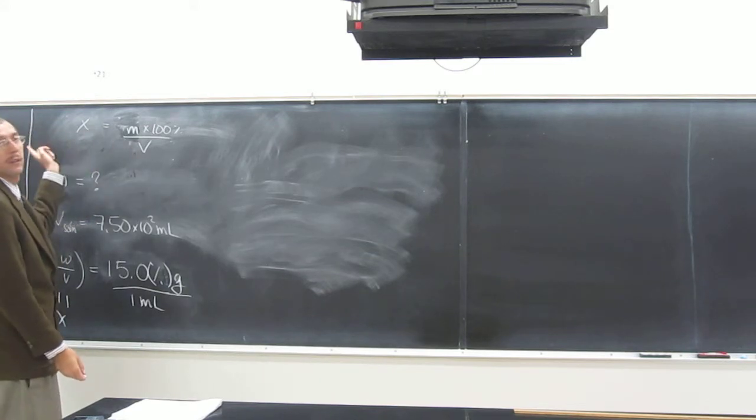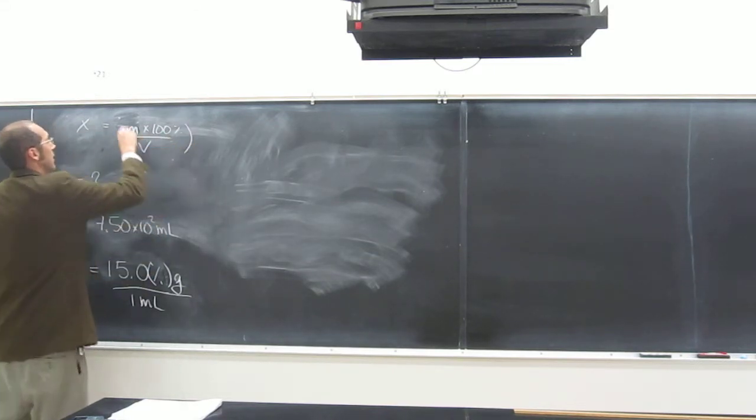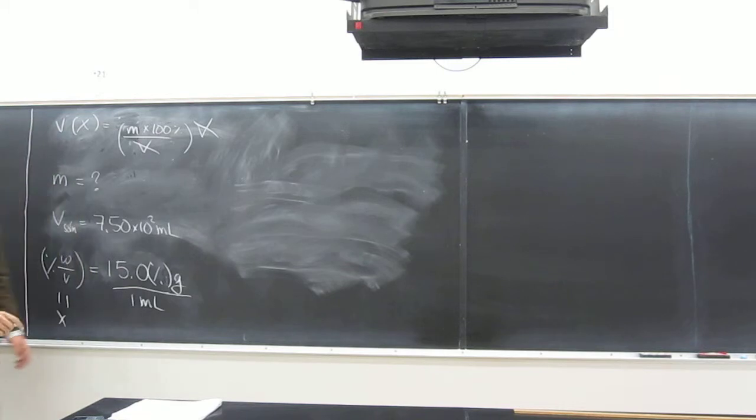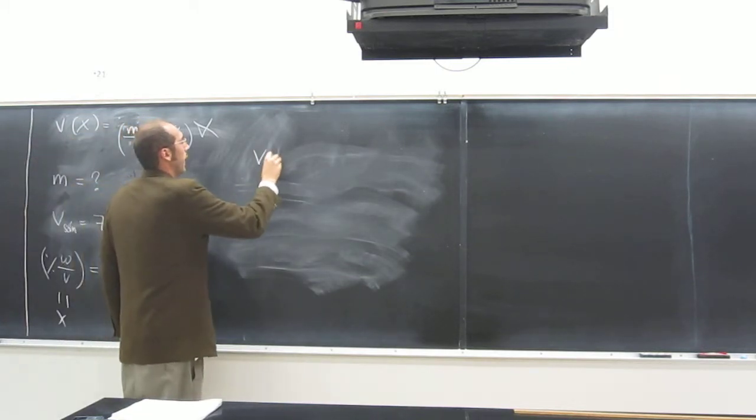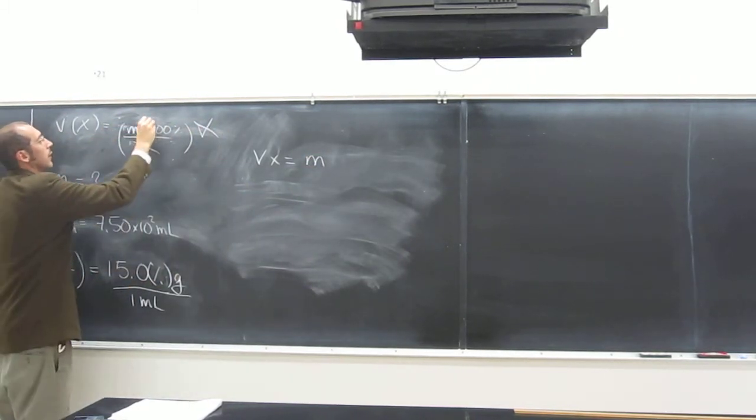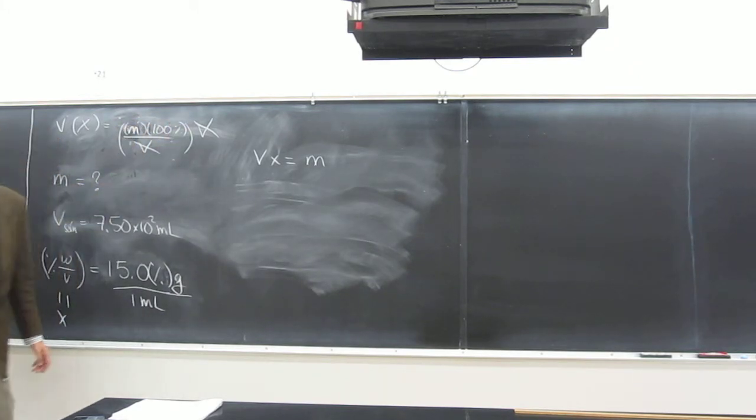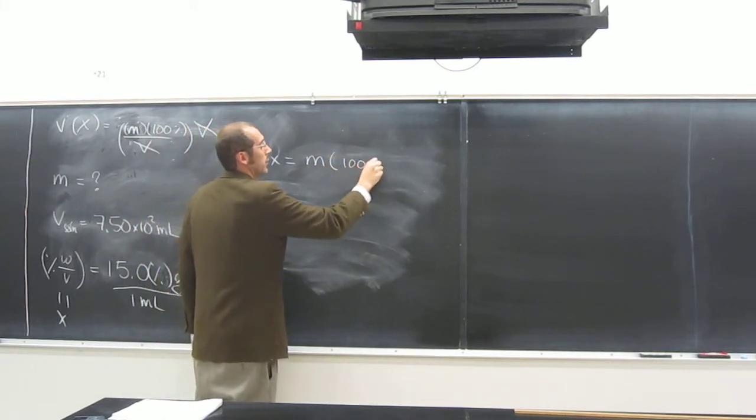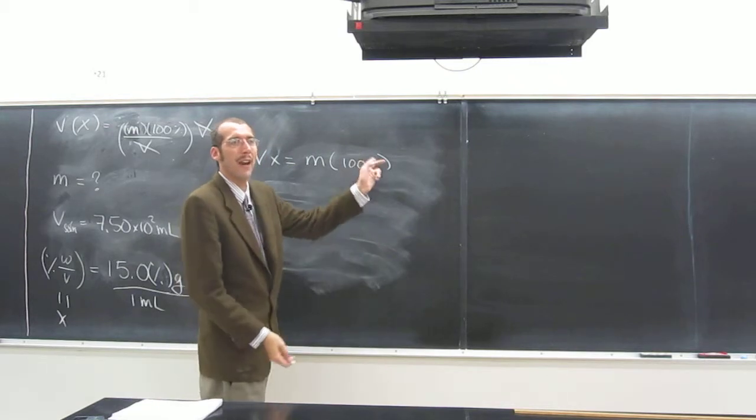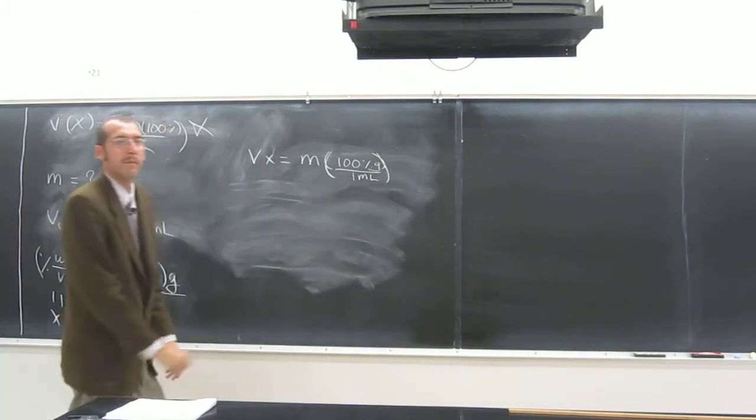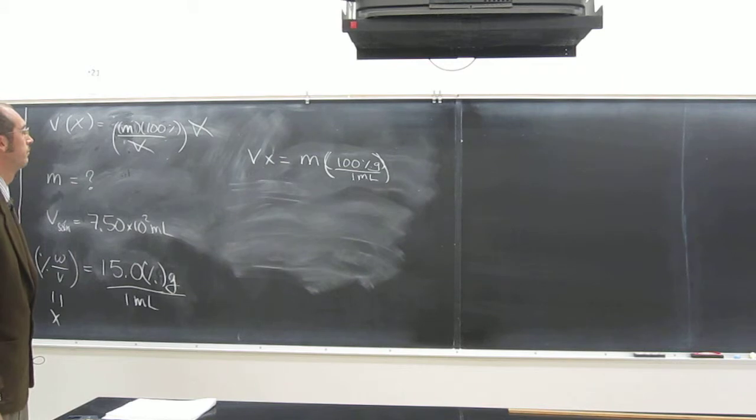So, what do we got to do? We got to multiply both sides by V. Is everybody okay with that? Cancel, cancel. So, what do we got now? We got V times X equals M. We should probably do that. So, V times X equals M, times what? Times 100 percent. And percent grams per mil. Grams per mil.